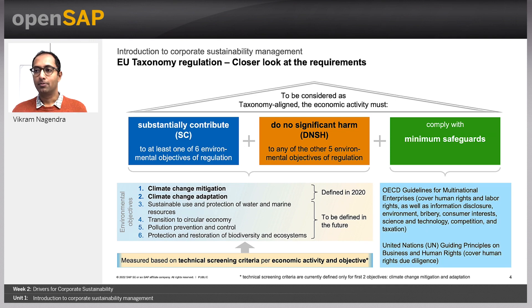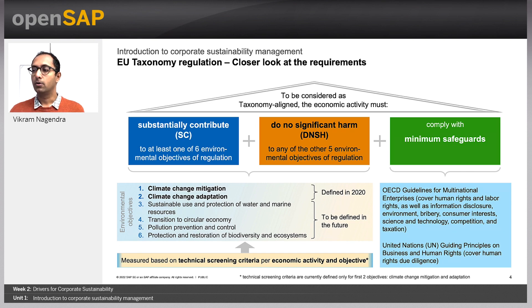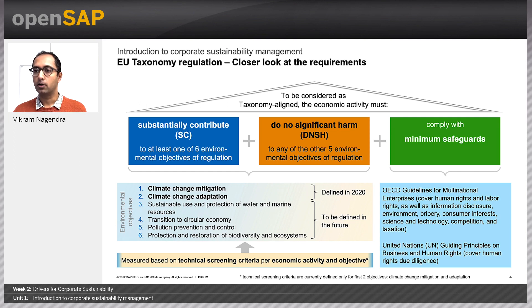Another key component of the corporate sustainability journey are regulatory requirements. Some of these requirements, especially related to ESG, are already effective and new ones will become effective starting 2024. Compliance to these regulations requires significant effort and investments on the corporate side, requiring not only effective governance internally, but also the need to ensure limited or reasonable assurance through audits. One of the regulations already effective is the EU taxonomy, which requires corporations to prove that their economic activity substantially contributes to environmental objectives.